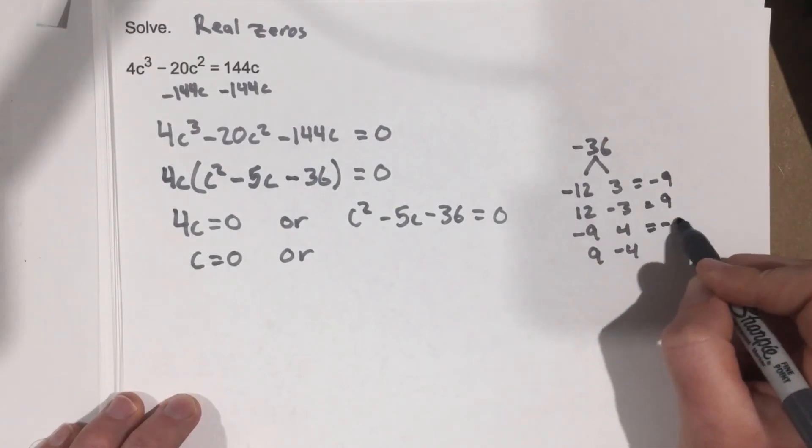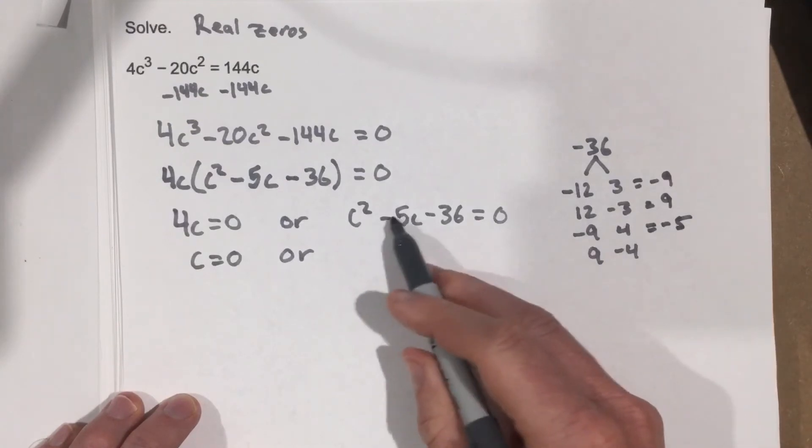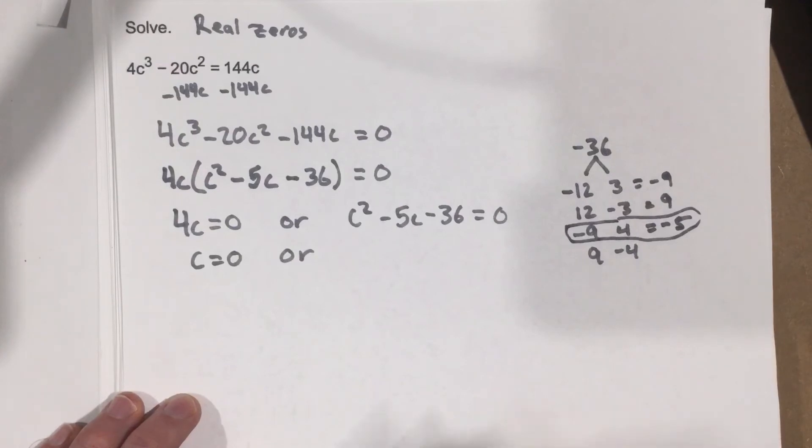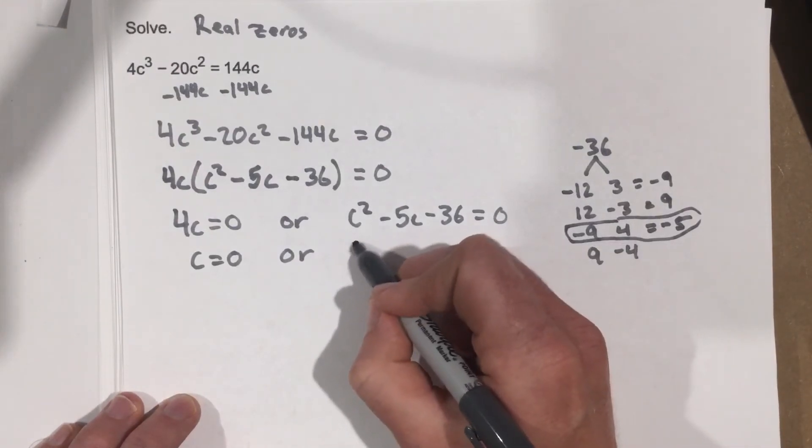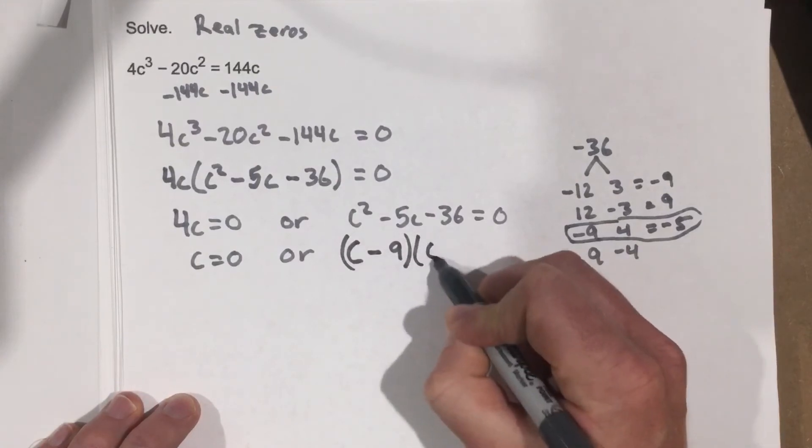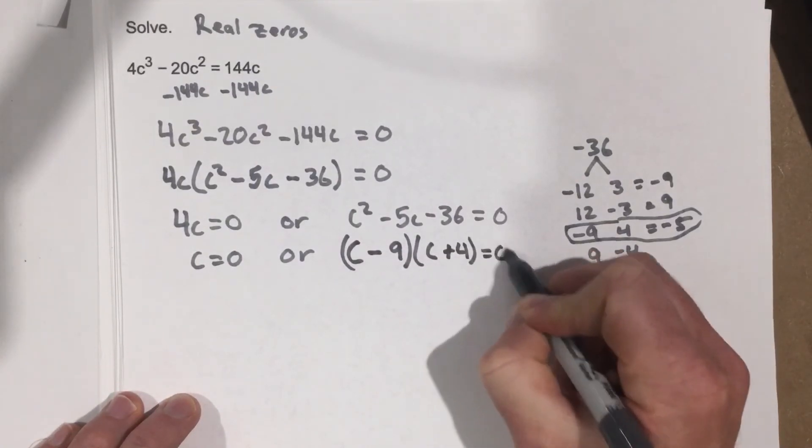Hey, that's the one we need, the negative 5 in the middle, right? So we're going to use negative 9 and 4. So we have c minus 9, c plus 4 equals 0.